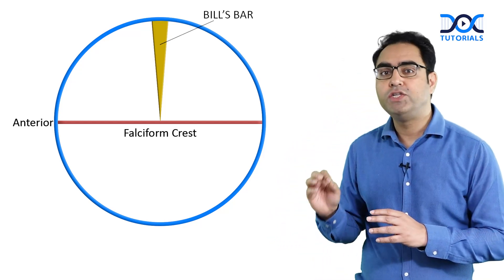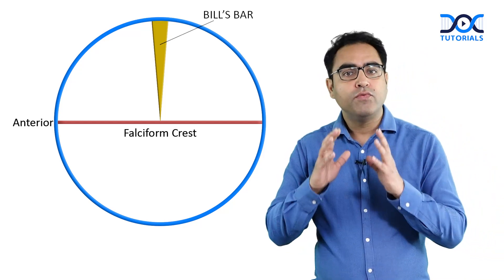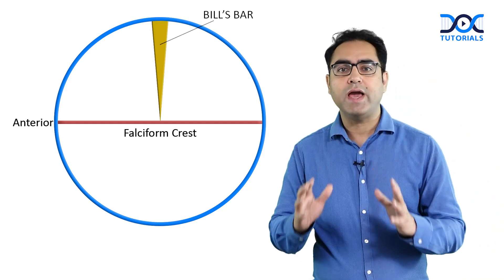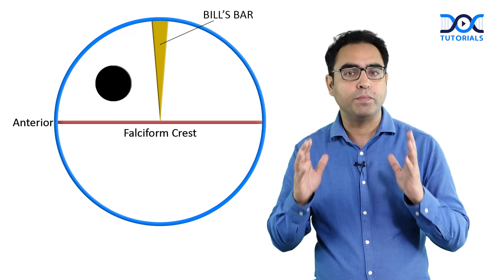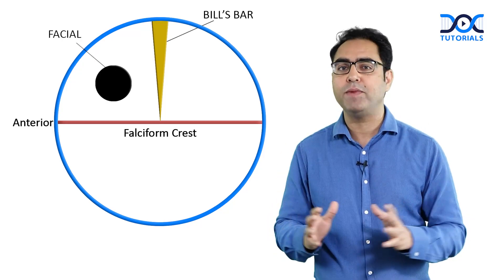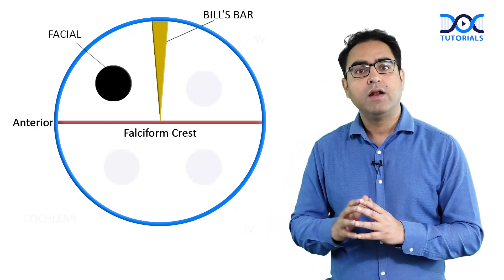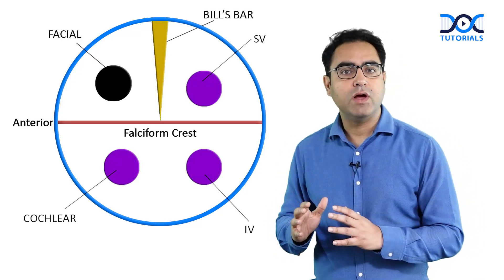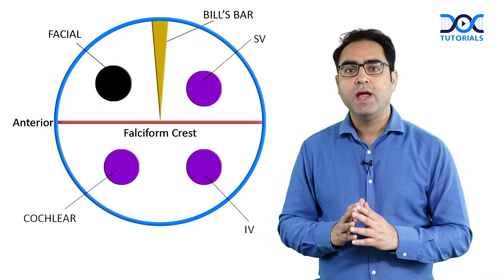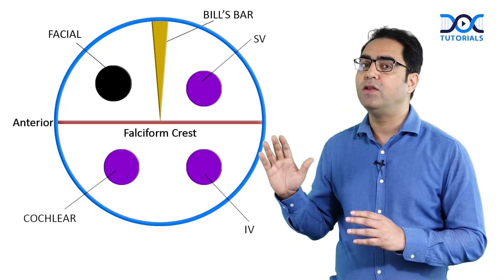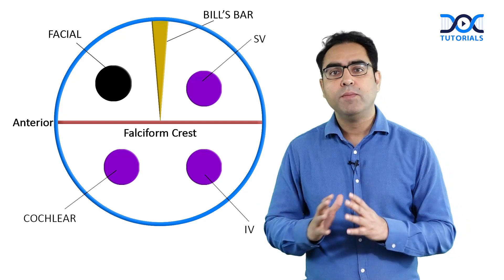Now comes the facial nerve location — very important. The facial nerve lies in the anterosuperior compartment of the internal auditory canal. Right below the facial nerve, we have the cochlear division of the 8th nerve, and then the superior vestibular and inferior vestibular divisions of the 8th nerve.